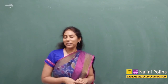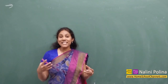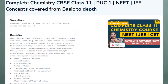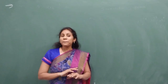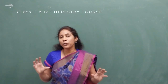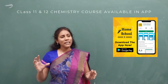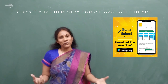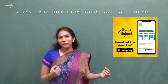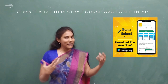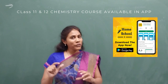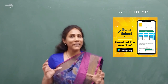Hey homeschoolers, hope everybody is doing good. You all know that we have recently launched a wonderful course for class 11 students. We have a complete class 11 chemistry course and also a complete class 12 chemistry course. So many people are very happy with both the courses and many were asking me to show a sample video or a demo video from the course. So here I came up with a demo video for you all. The topic I brought here is ionic radii and isoelectronic species.